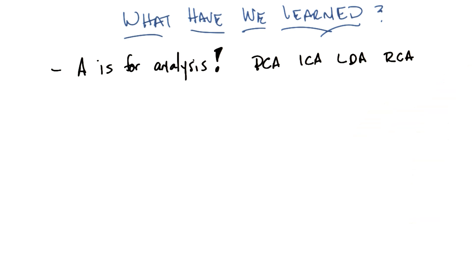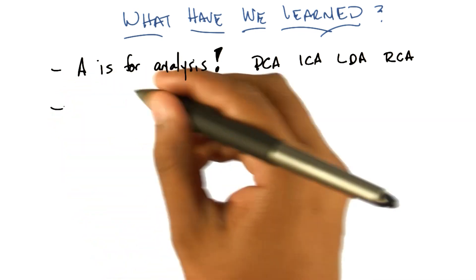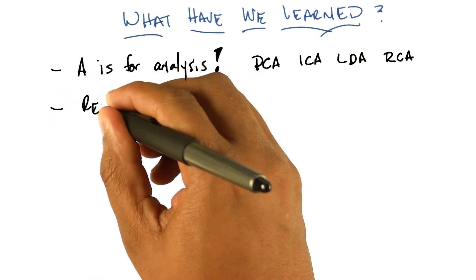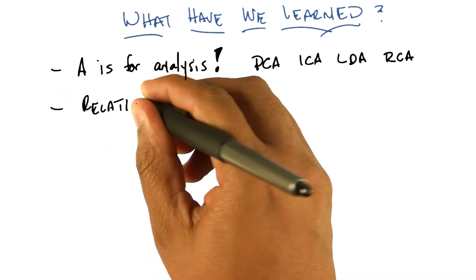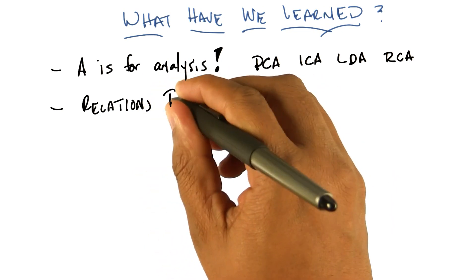Okay, so we learned about PCA, ICA, LDA, and RCA. What else did we learn about? Well, I think that was it, but we talked specifically in detail about the relationships between some of these. In particular, these are all examples of feature transformation.